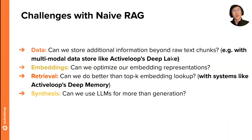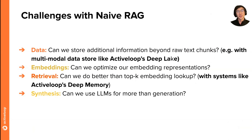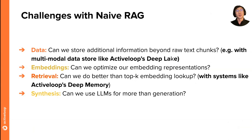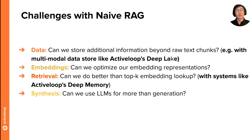This also includes the embedding model you use, which is separate from the LLM and is used to index and retrieve the data. Can we optimize embedding representations so that data is retrieved better because the embedding models fit your data domain? Can we invest in better retrieval algorithms? Top K embedding lookup is standard, but there are ways to improve retrieval performance. And going to the LLM itself: can we improve prompts? Can we use LLMs in more places than just the generation step — for reasoning, planning, and handling a more diverse set of questions?